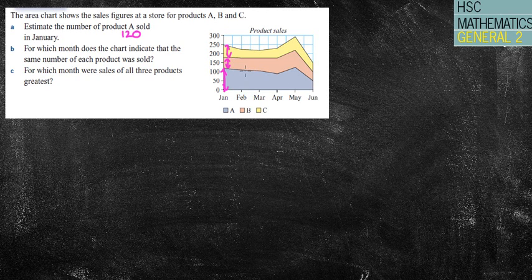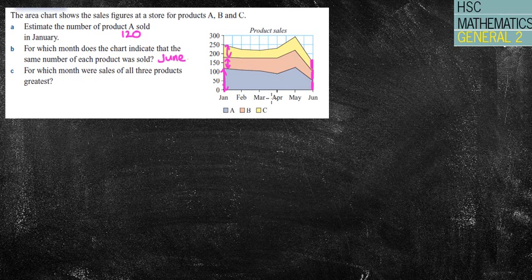Looking across the months — the distances are bigger, bigger, bigger... here we go: that distance, that distance, that distance — it's pretty much all the same. So the answer is June. And for which month were the sales of all three products the greatest? We're looking for the biggest total distance. That's pretty big there, pretty big there, pretty big there — so the answer is May.